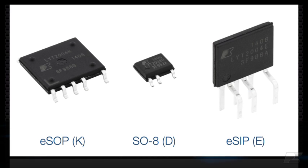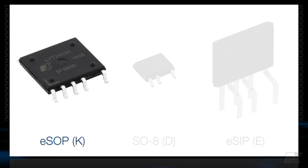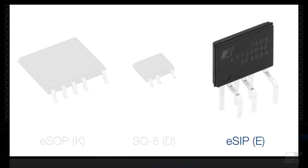Light Switch 2 comes in three package options: the highly compact SO8 package, the thermally efficient low-profile ESOP, and the small footprint ESIP package.